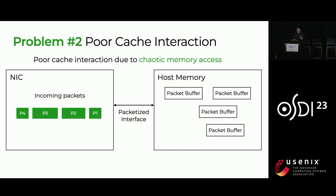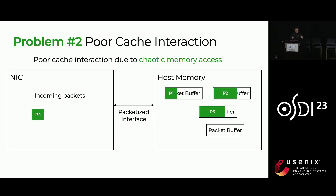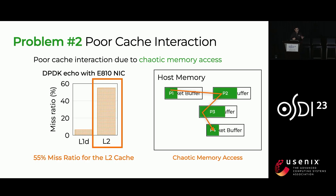The second problem with the packetized interface is that it has poor cache interaction due to a phenomenon that we call chaotic memory access. Even with this interface, when software accesses the packets, because these buffers can be in arbitrary memory locations, it's really hard for the CPU to predict what the next access will be. As a result, even when you use a simple echo server with DPDK, it's as much as a 55% miss ratio in the L2 cache.